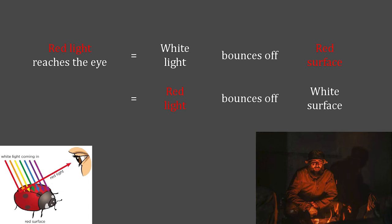So it's actually an ambiguous situation. If red light reaches your eye, is it because you're looking at a red object in white illumination or you're looking at a white object in red illumination? Or as you can imagine, there are many other possible combinations.